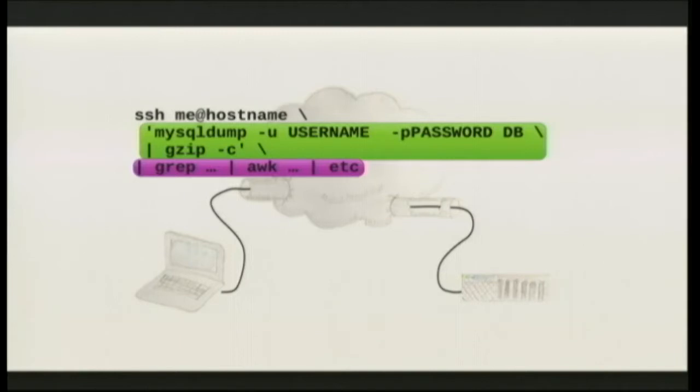Usually when people think of SSH tunnels, they're thinking of tunneling more than just the output of Unix commands. SSH can listen for incoming connections on a port that you specify and then forward any traffic that comes into that port through your encrypted connection to another host and port that you specify on the other end. And it can do this in either direction — you can listen for traffic on your local machine and forward that to the other end, or you can listen for traffic on the remote machine and forward that back to you.